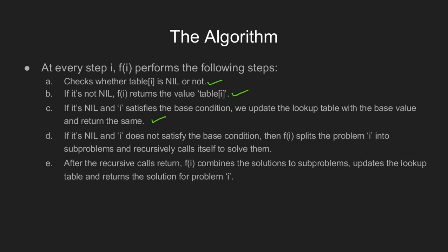However, if i does not satisfy the base condition, then fn splits the problem i into subproblems and recursively calls itself to solve them. After the recursive calls returned, fn combines the solutions to subproblems, updates the lookup table, and returns the solution for problem i.